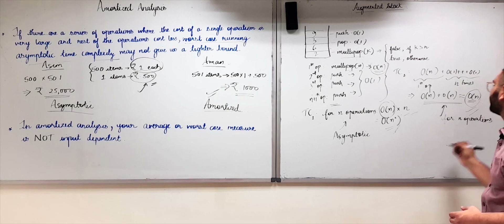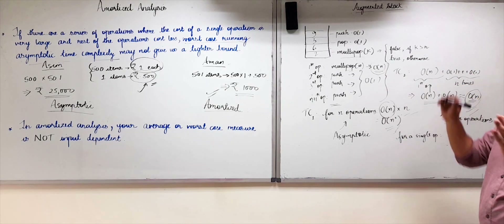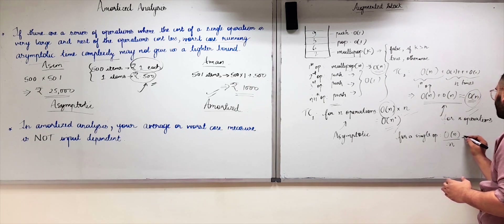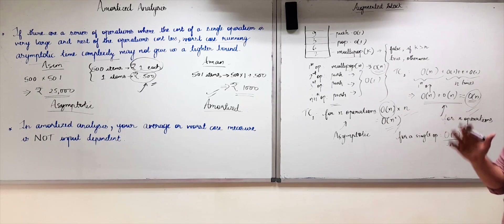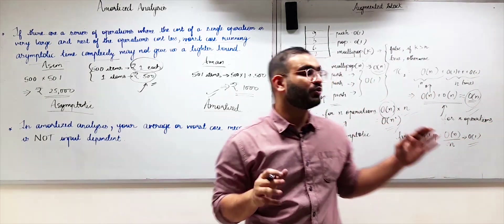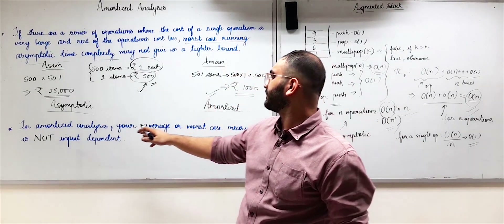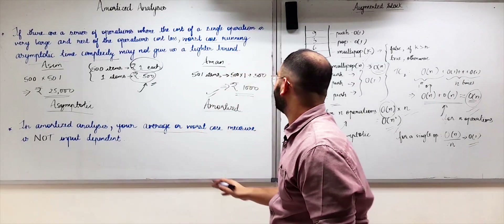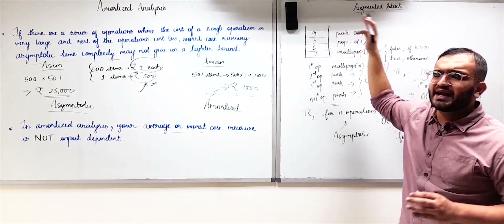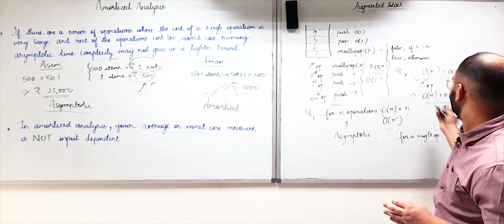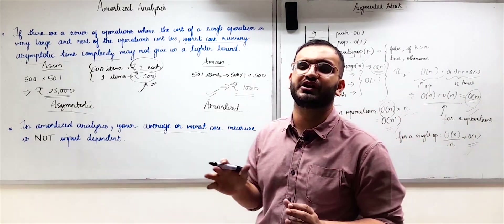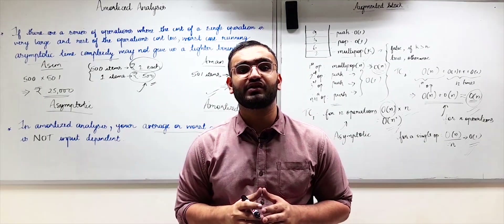The interesting thing is: for n operations the time complexity of our augmented stack is O(n), so dividing by n gives O(1) per operation. There is no change in the amortized time complexity of our augmented stack even when we add the multipop(k) operation. This is why amortized analysis is useful — the average cost per operation does not depend on the input, whether there is 1 element or 1000 elements in the stack. In the next video we will see the first method of amortized analysis: the aggregate method.